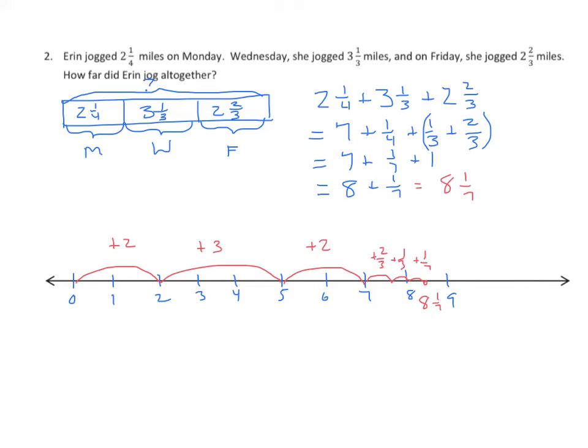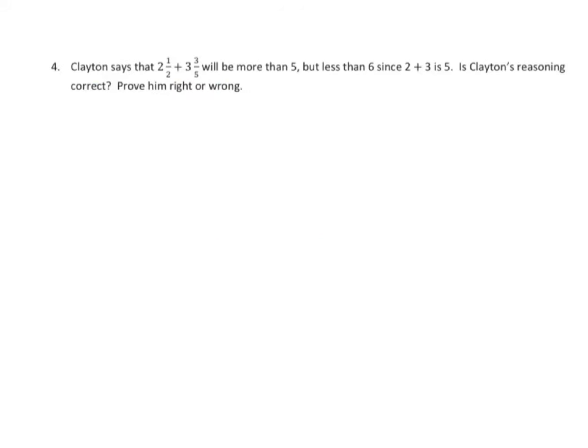Let's do one more word problem that's similar to what you're going to see in your homework. Clayton says that 2 and 1 half plus 3 and 3 fifths will be more than 5 but less than 6 since 2 plus 3 is 5. Is Clayton's reasoning correct? Prove him right or wrong. Well, we know that 2 plus 3 equals 5. And, we have 1 half plus 3 fifths in addition to that. Well, we notice that 3 fifths is more than half. So, the sum of this is going to be more than 1.